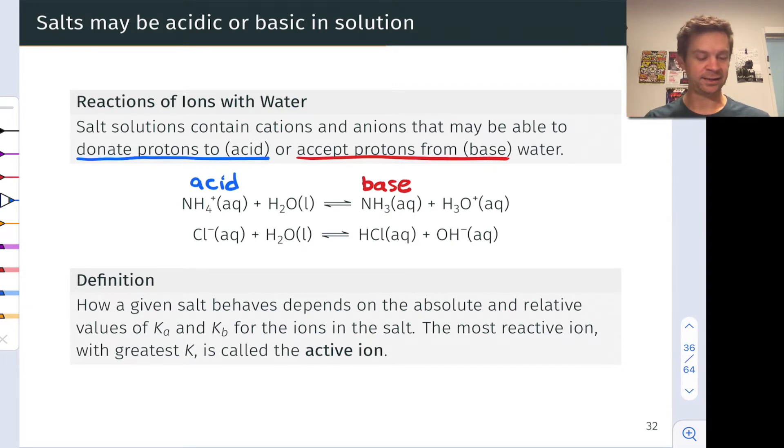An example of an anion acting as a base is shown below. Chloride anion, at least in theory, can react with water to accept a proton and form its conjugate acid HCl, as well as the conjugate base of water OH-. Now, the second reaction is much less favorable than the first and occurs to a negligible degree for reasons related to the conjugate seesaw that we'll touch on in a second. But for the time being, let's entertain the notion of these two reactions.